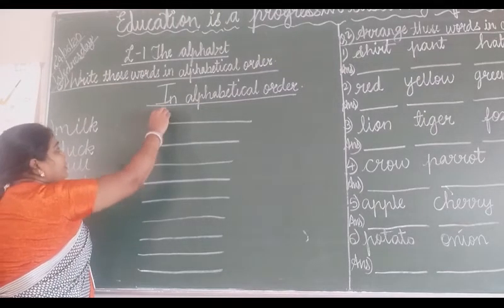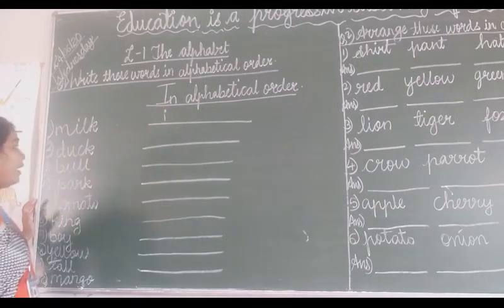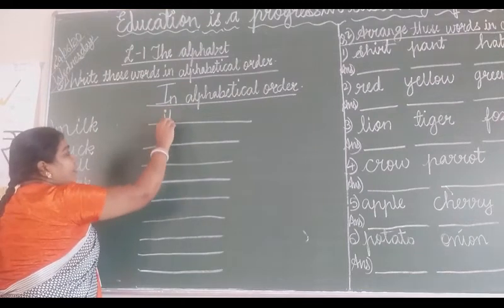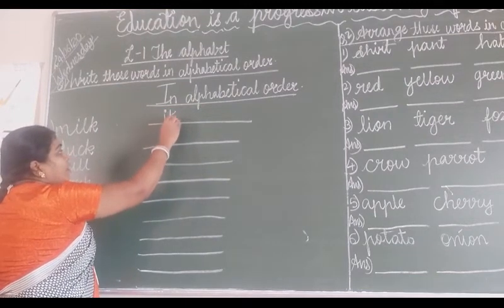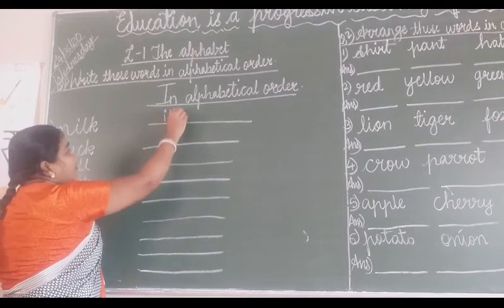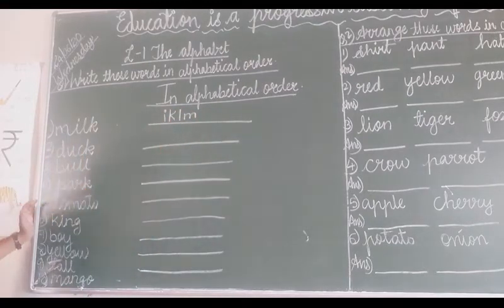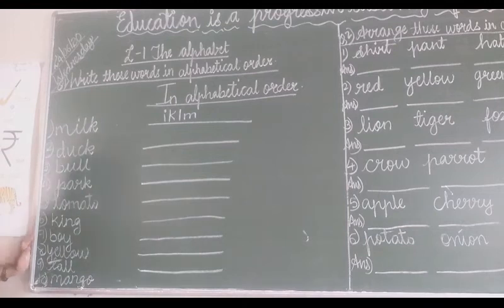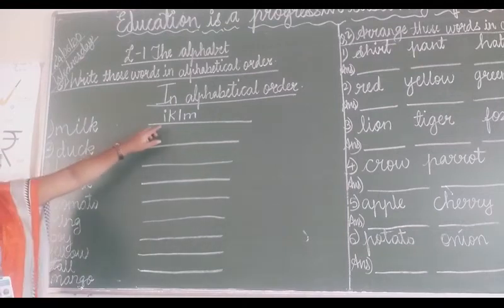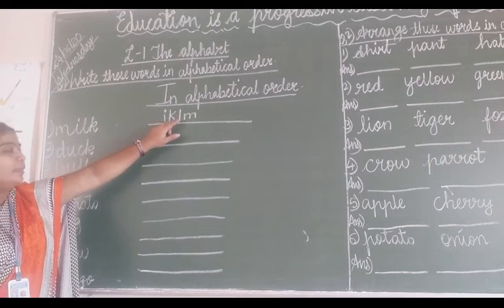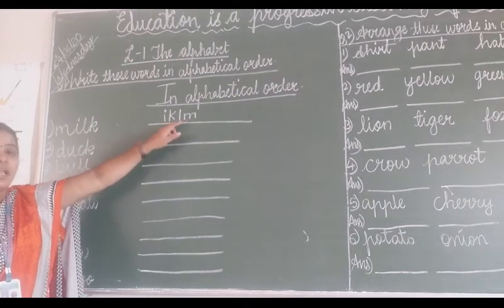I, J, K - K. Then L, and in the last, M. So in this way you have to arrange the letters. First I will come, after I comes K, then L, and in the last M.